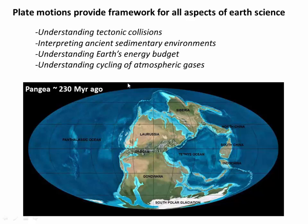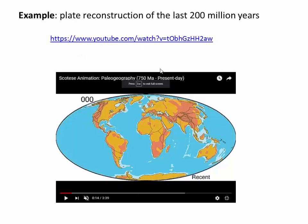And finally, as a key part of the Earth's atmosphere system, the distribution of continents can have a profound impact on the cycling of atmospheric gases. So it's important. And luckily, we know a lot about how plates have moved around over time.